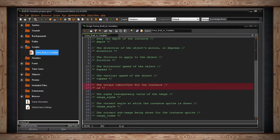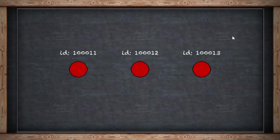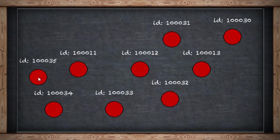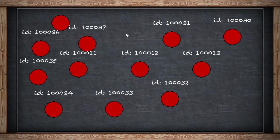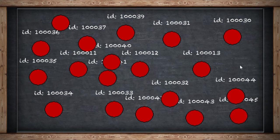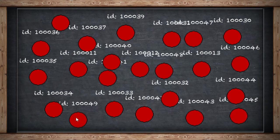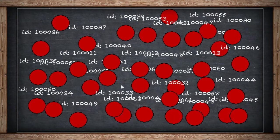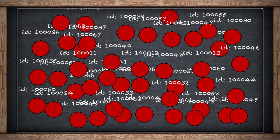ID is a unique identifier for an instance. When it's created in your room, GameMaker gives it a very specific number. This is read only — you can't manipulate this number yourself, but you can use it to your advantage by reading it. For example, when one instance collides with another, you can get the collided instance's ID, check what it is, and use it for other purposes. You can manipulate the code of that one particular instance by using its ID, or check what kind of instance it is.